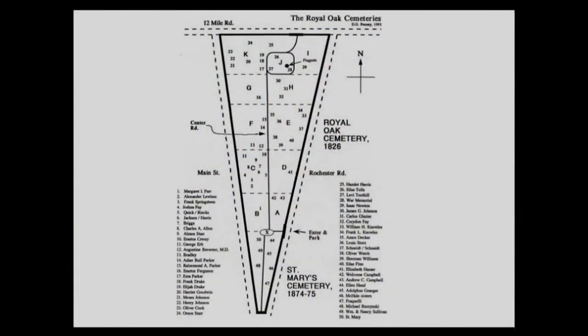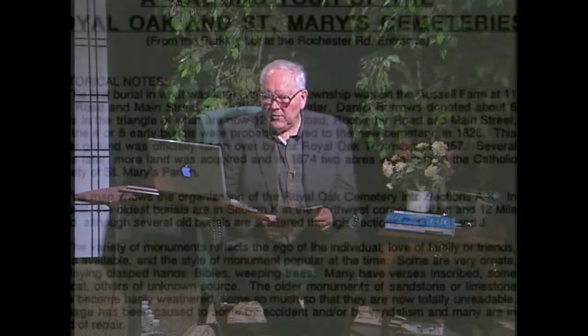Sites one through fifty are described in the little booklet. For example, site number nine is the Starr site where Almond Starr is buried, his son Edwin Starr, Clara Ellen Starr, and so on. You'd come away with a feeling for the people who had lived in Royal Oak and the people who were buried in that cemetery.